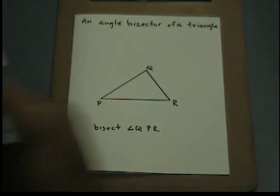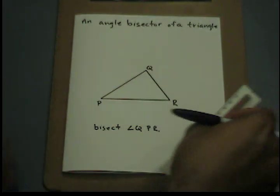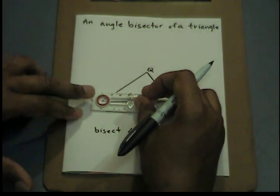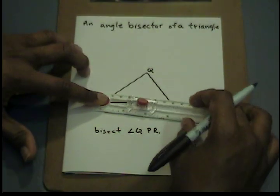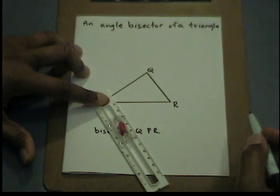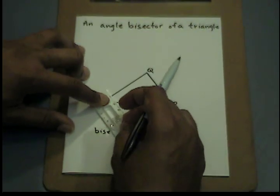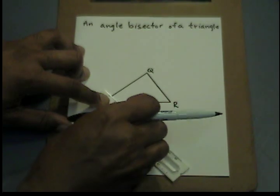In order to bisect the angle, I'm going to first place the rotating end on P and create an arc that intersects both PQ and PR but also lies within the angle.